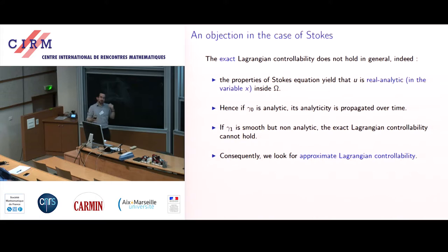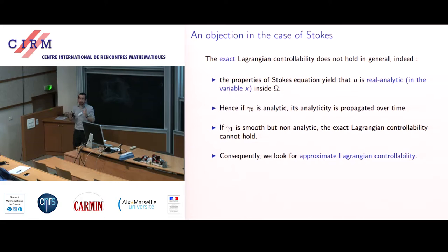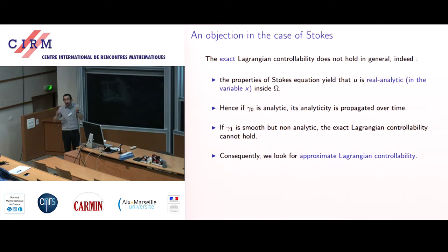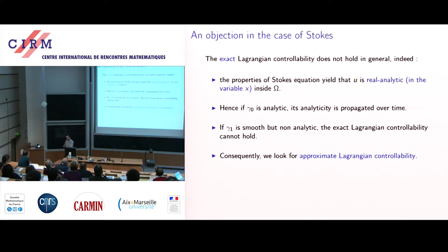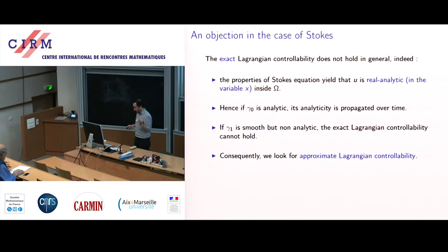I showed you an objection to exact Lagrangian controllability in the case of the Euler equation based on analyticity. Basically the same objection applies here — it is even simpler. The solutions of the Stokes equation with no right-hand side are real analytic. So you can use the same argument: for all time you have a U that is analytic with respect to the X variable, the corresponding flow propagates analyticity, and you cannot go from any gamma zero to any gamma one. So we consider approximate Lagrangian controllability.